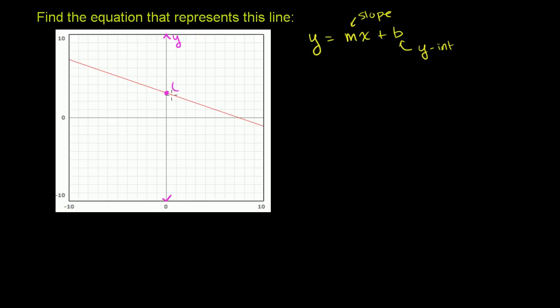x is always going to be equal to 0 at the y-axis. So x equals 0, y equals 3. So our y-intercept is 3, and it makes complete sense.